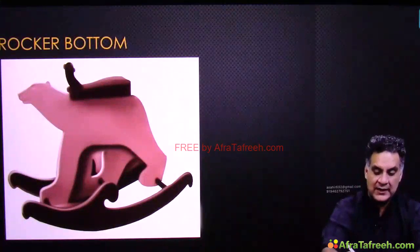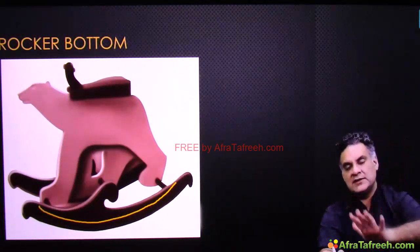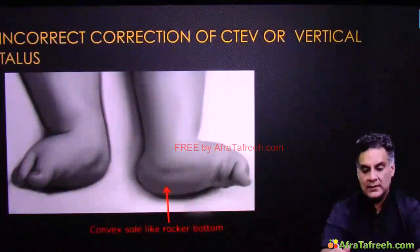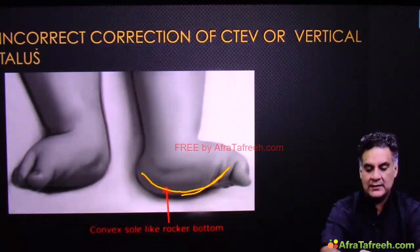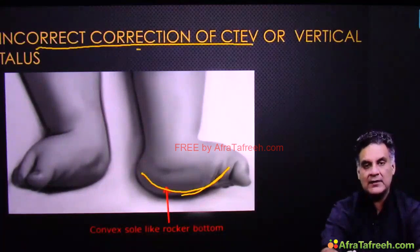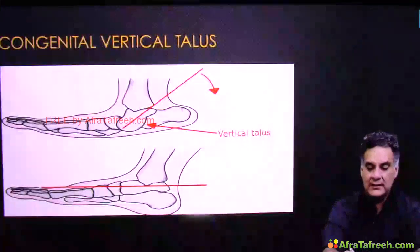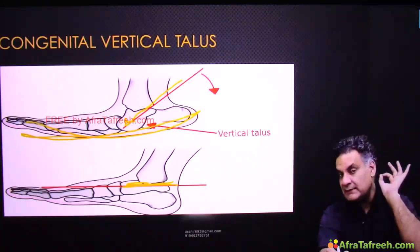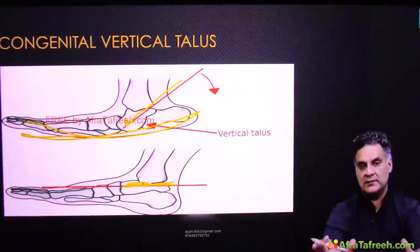If you look at the toy of a child, there is a convexity in the sole on which the child rocks, called rocker bottom. Rocker bottom is compared to a rocker bottom foot, which can be seen in incorrect correction of CTEV. When the talus is normally horizontal but is vertical, you get a rocker bottom foot. The image of rocker bottom foot is very commonly asked in exams.